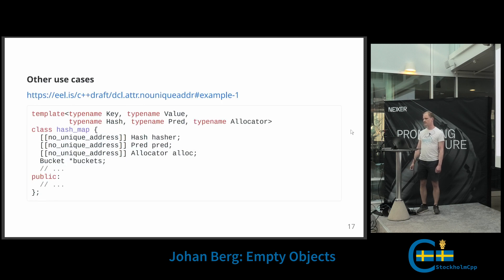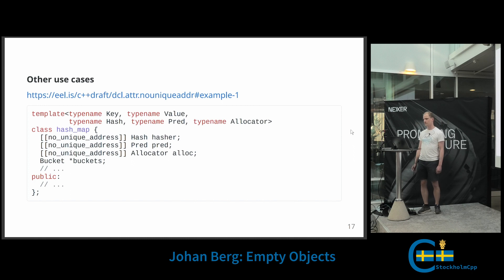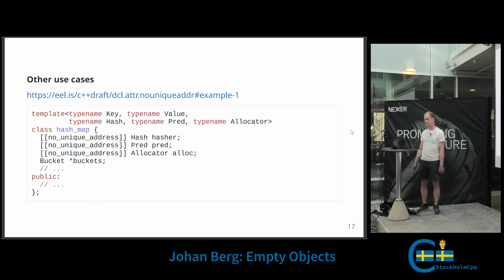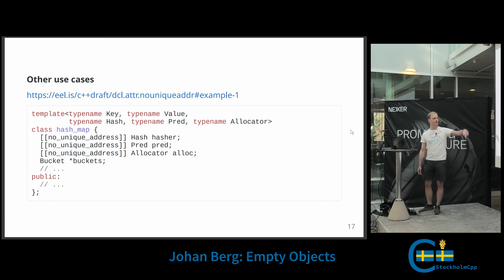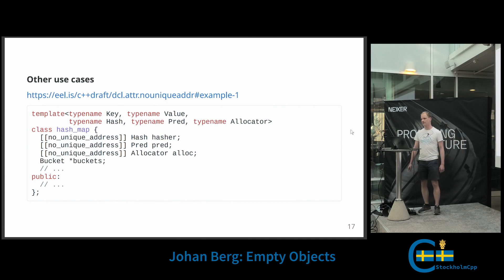I want to show you another example to give you an idea of other places where you can use this. Here's a hash map example. It has a bunch of template parameters: a hash, which is how to hash the keys; a predicate, which is how to compare the keys; and an allocator, which is how to allocate memory for the key-value pairs. These three could potentially be empty objects, and if they all are, they could share the same address as the bucket pointer. So the size would just be the size of a bucket pointer.